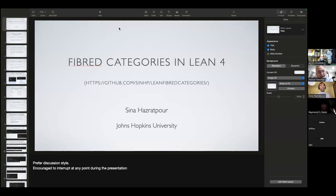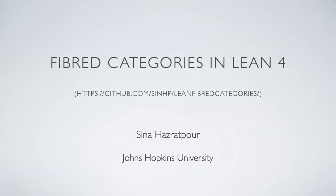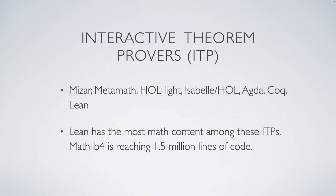There is a repository of mechanized proofs of fiber categories in Lean — these are essentially Lean code which checks that all constructions and proofs are correct. I shared the link online; you can go there to follow along now or later. It's github.com/synhp/fiber-categories.